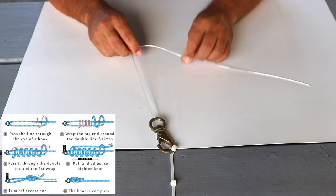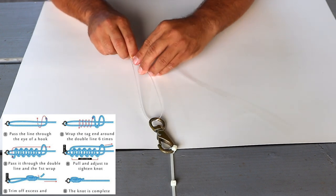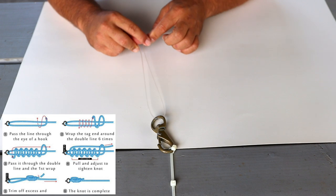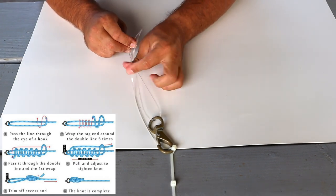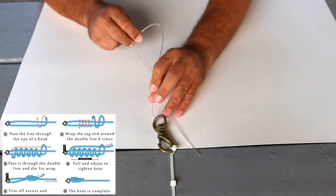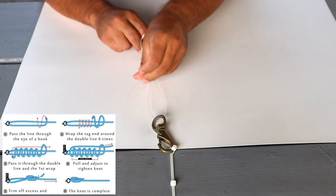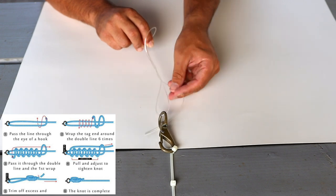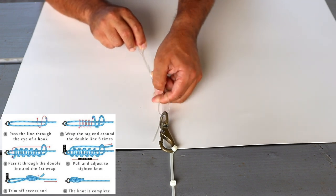Hold that loop and wrap around the fingers this way. With this line you're going to want to wrap it around both those pieces of line about five times. If this was braid, I would say do it at least ten times minimum because braid has a tendency to slip a lot more.